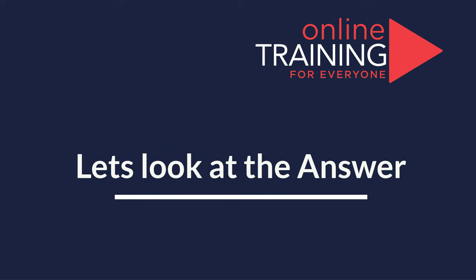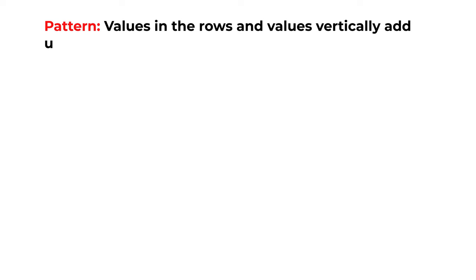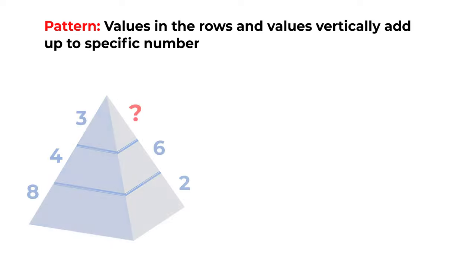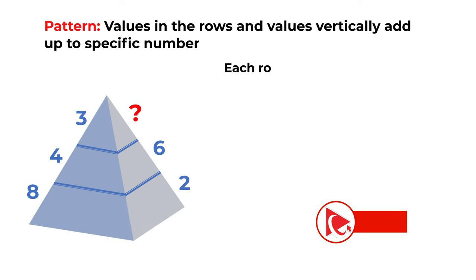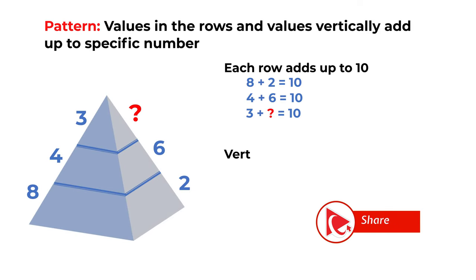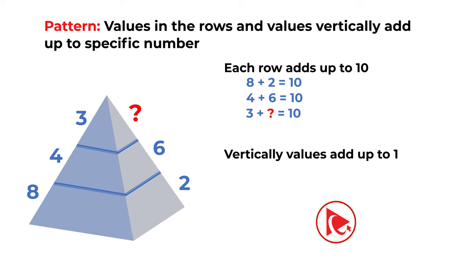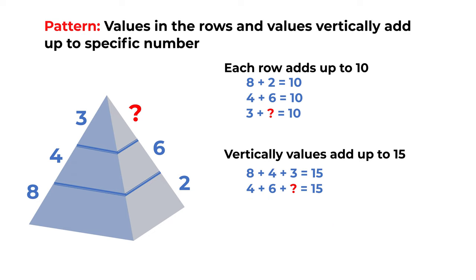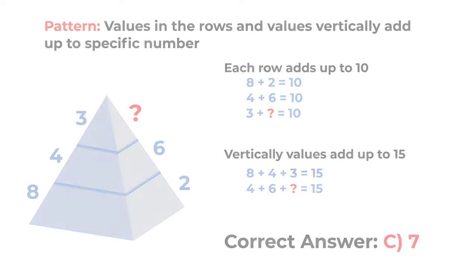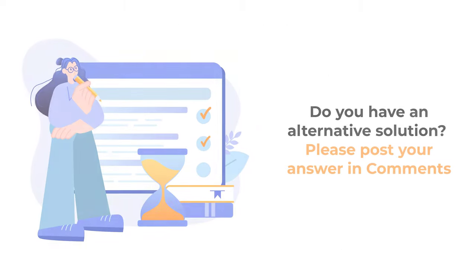The key to solve these challenges is always look for patterns. If you look closely, each row adds up to 10, and vertically values also add up to 15. So the correct answer here is choice C, 7. Hopefully you now know how to answer similar problems on the test.